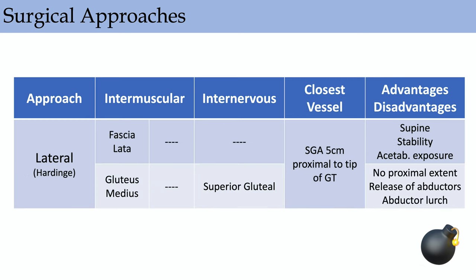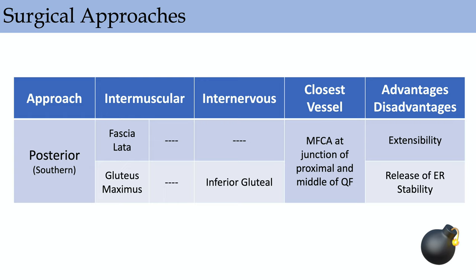The lateral or Hardinge approach is an intermuscular interval between the fascia and glute medius. You're at risk for the superior gluteal artery five centimeters proximal to the tip of the greater trochanter, so you don't want to extend your incision that far proximally. This can be performed supine as well, but there's no proximal extent because of that artery. The downside is you're releasing the abductors and need to repair them, so patients can have Trendelenburg lurch. Historically, this has had the lowest risk of dislocation.